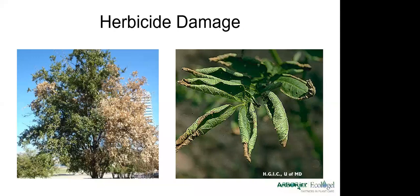The other one I get a lot is herbicide damage. Honestly, this one has been coming up more and more ever since the whole glyphosate issue and people are trying to avoid glyphosate. Now we're seeing all these other herbicides being used in the industry that maybe have a little less research or are some sort of organic product. Next thing we know, we're seeing a lot more tree damage. One of the telltale signs with herbicide damage is the leaves will curl or cup upwards — that's a quick telltale sign.